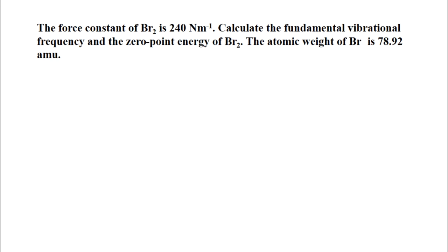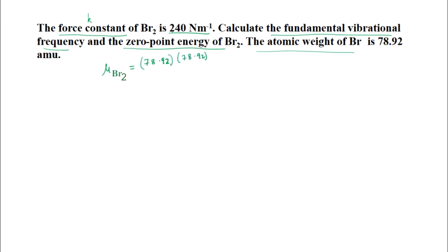The next question: the force constant of bromine is 240 N/m. We have to calculate the fundamental vibrational frequency and the zero point energy of bromine, given its atomic weight. We start by calculating the reduced mass: μ(Br₂) = 78.92/2 = 39.46 AMU = 39.46 × 1.661 × 10⁻²⁷ kg.